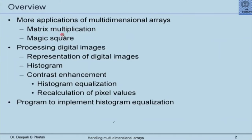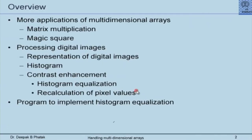I will briefly show the matrix multiplication problem and discuss the magic square, but more importantly I will spend time on processing digital images — covering representation of images, the notion of a histogram, and how contrast enhancement in pictures is done by simple matrix operations resulting in a method called histogram equalization. This requires recalculation of pixel values, and we shall see an illustration and a program to implement histogram equalization.